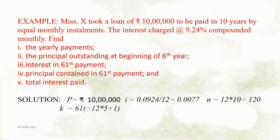In this example, loan amount is Rs 10 lakh, so P equals 10 lakh. Interest rate is 9.24% compounded monthly, so i = 0.0924 divided by 12, which equals 0.0077. Number of periods equals 12 multiplied by 10, so n equals 120. And k equals 61 because we want principal outstanding at the beginning of the 6th year, which implies 12 multiplied by 5 plus 1.